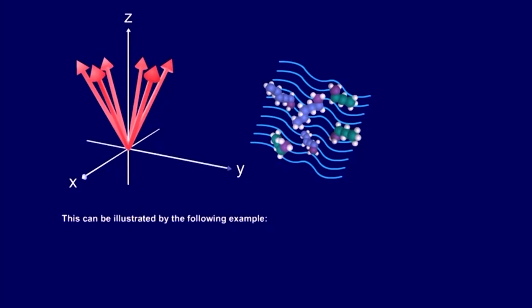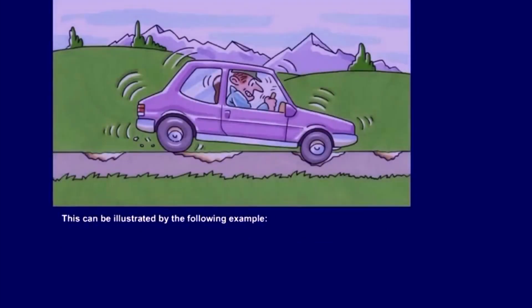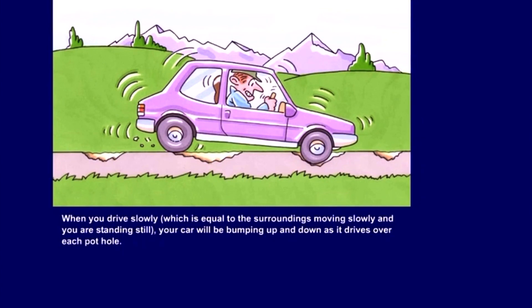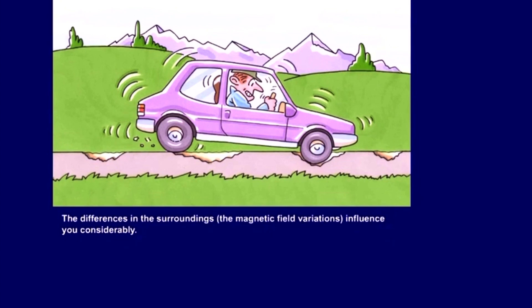This can be illustrated by the following example. Imagine that you drive down a street with many potholes. When you drive slowly, which is equal to the surroundings moving slowly and you are standing still, your car will be bumping up and down as it drives over each pothole. The differences in the surroundings, the magnetic field variations, influence you considerably.